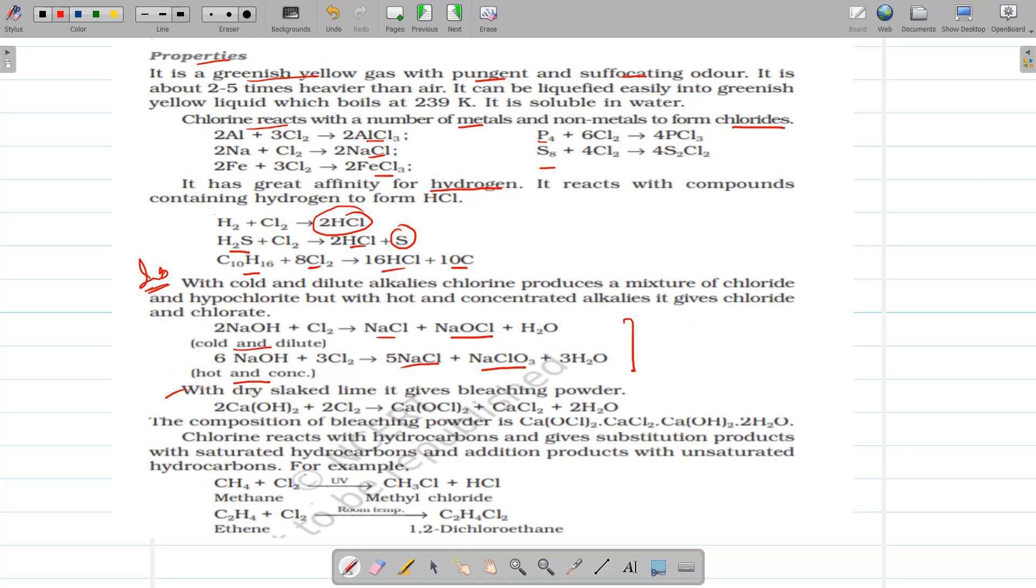Then, this is also important that with dry slaked lime, it is forming bleaching powder. That when chlorine is passed through dry slaked lime, there is formation of bleaching powder, calcium oxychloride, calcium chloride, and water.